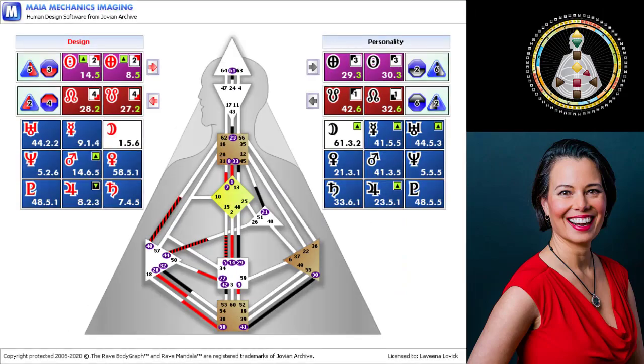And that's shown in the body graph by the design being the red, the personality being the black. The two actually never really meet. We are a quantum illusion of the two.